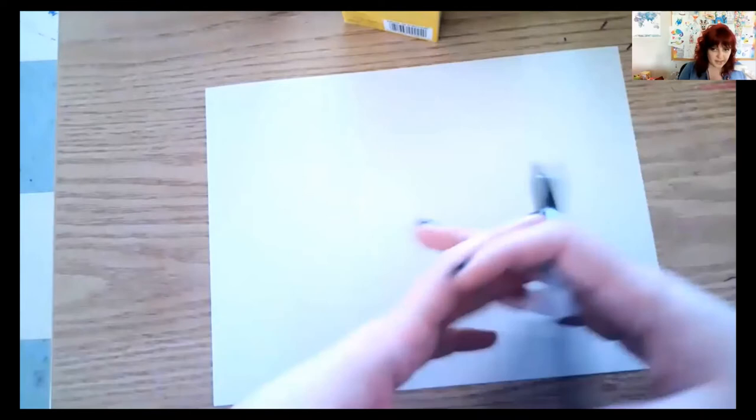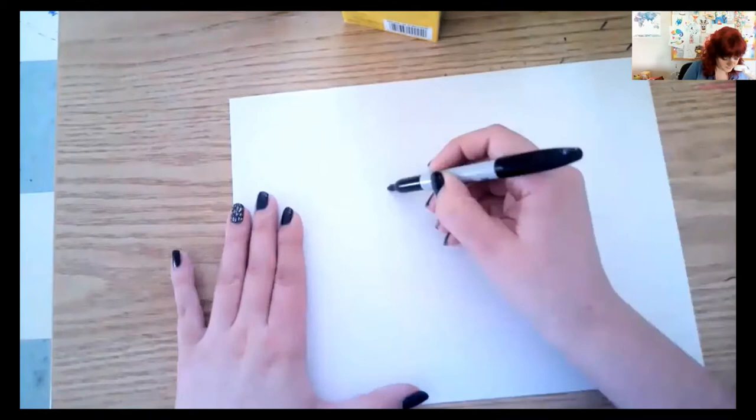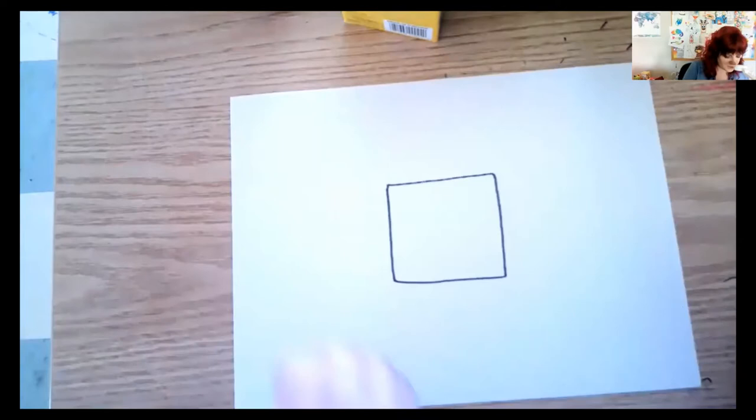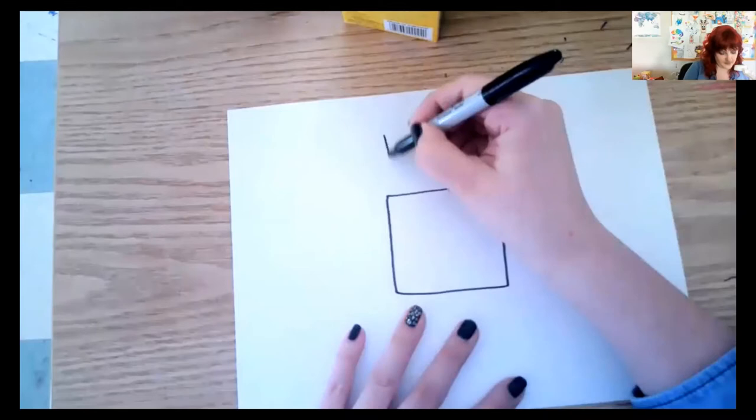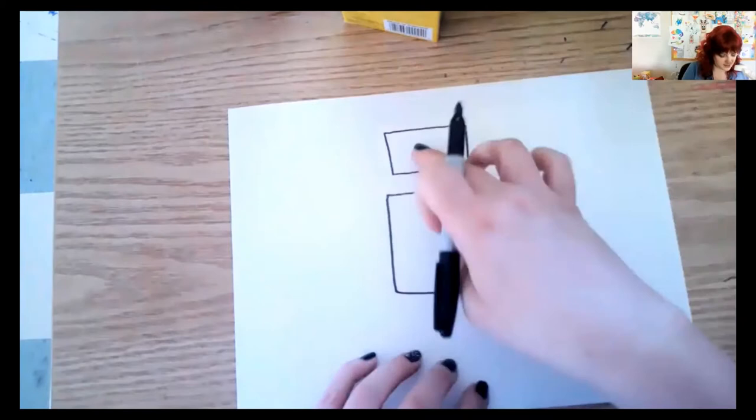So I'm going to start with a square. Just like that, right in the middle of my paper. I'm going to do a rectangle right above it. So this is going to be the body and the head of my robot.